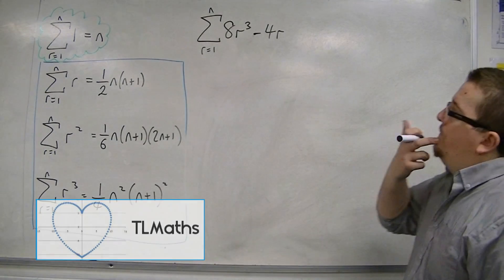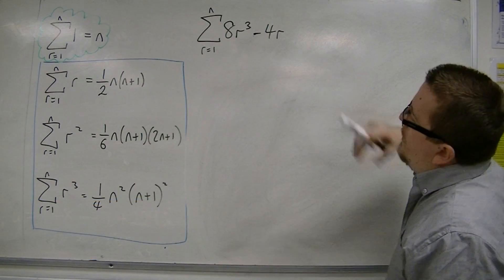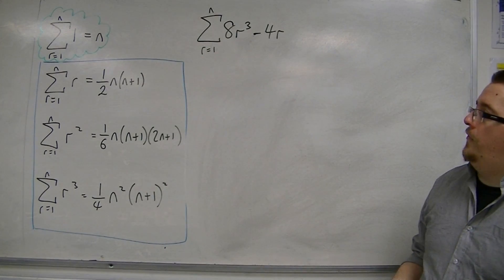I'm going to go through another example here. We've got 8r³ minus 4r. We want to factorise this series.